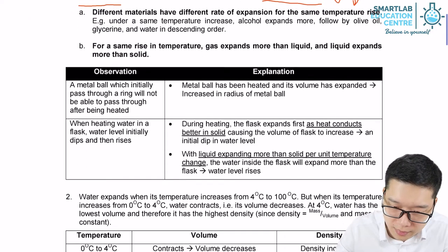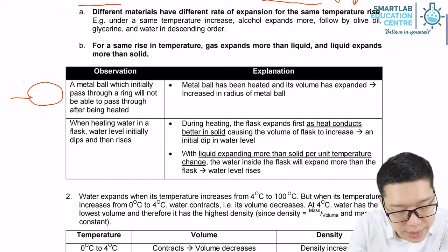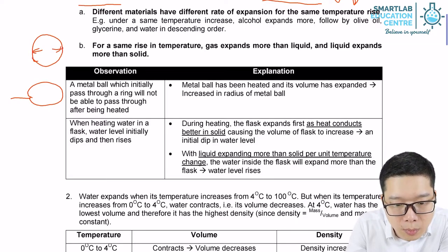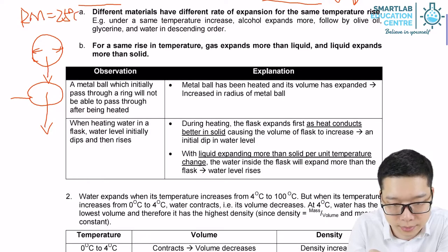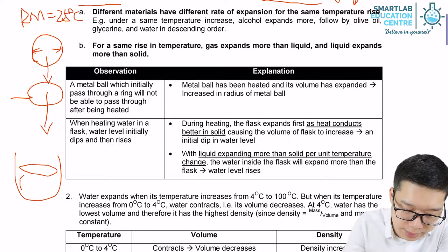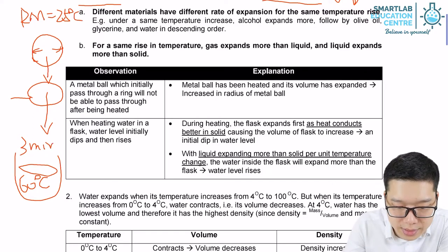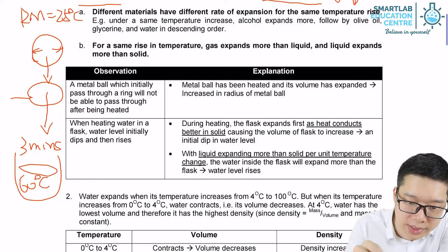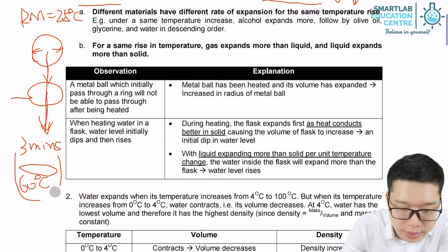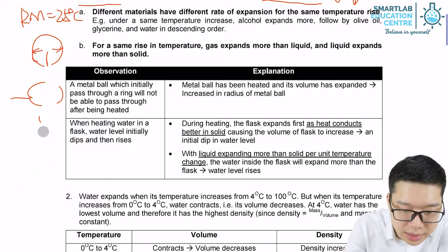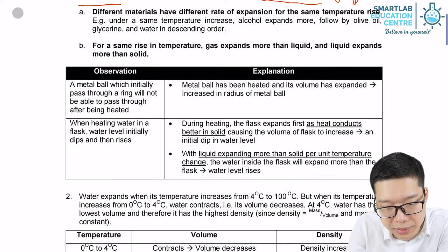Let's look at two examples. First, if I have a metal ring and a metal ball where the diameter of the ball is just enough to pass through the metal ring at room temperature — say 25 degrees Celsius — and I use warm water at 60 degrees Celsius to warm the ball up for a few minutes, when I take out the ball and try to let it pass through the ring again, it will get stuck. This experiment shows that when a small amount of heat is absorbed by the metal ball, its volume increases, so it can no longer pass through the ring.